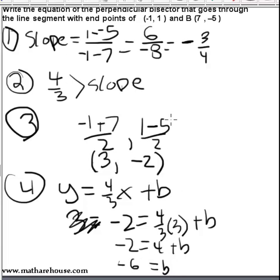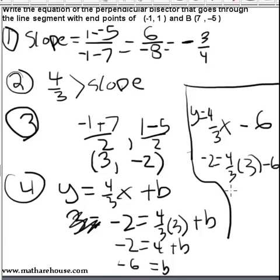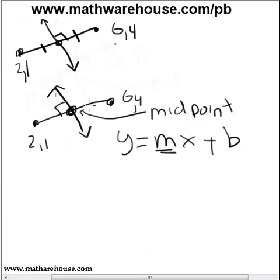We have a slope and a y-intercept, so we can write our equation: y = (4/3)x - 6. To make sure we didn't make a silly error, substitute the midpoint in: does -2 equal (4/3)(3) - 6? That's 4 - 6 = -2. Yes, it checks out. That's it for an introduction to calculating the perpendicular bisector. More information and worksheets can be found at mathwarehouse.com/pb.